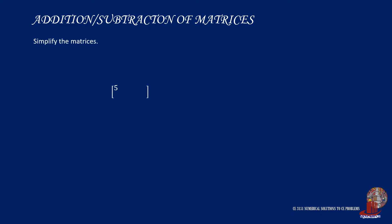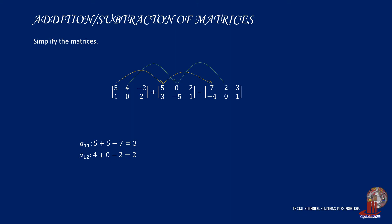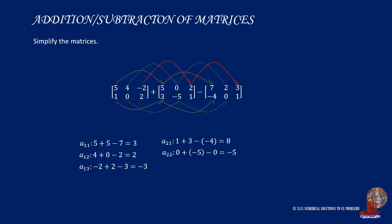For example, add the first matrix with the second and subtract the third. Starting with the elements at index 1,1: 5 plus 5 minus 7 equals 3. Index 1,2: 4 plus 0 minus 2 equals 2. Index 1,3: negative 2 plus 2 minus 3 equals negative 3. Moving to the second row, index 2,1: 1 plus 3 minus negative 4 equals 8. Index 2,2: 0 plus negative 5 minus 0 equals negative 5. Index 2,3: 2 plus 1 minus 1 equals 2.